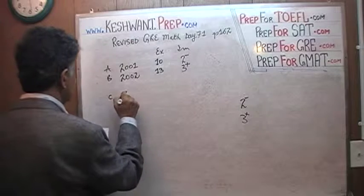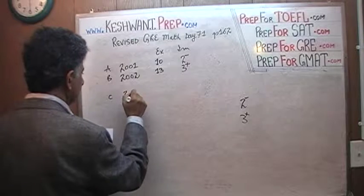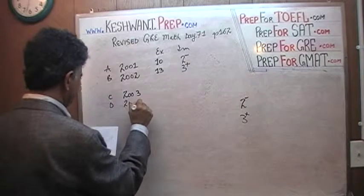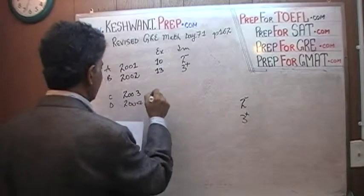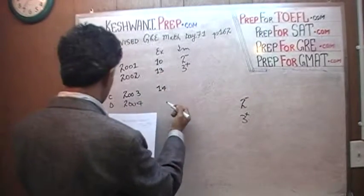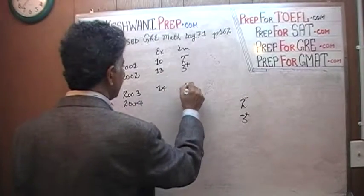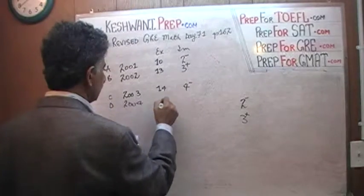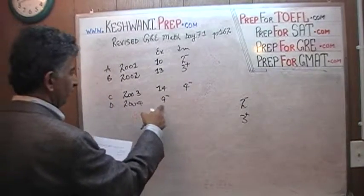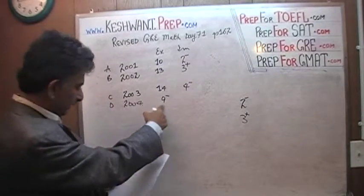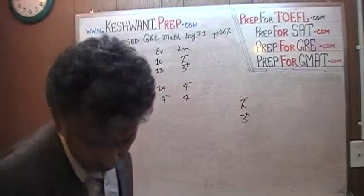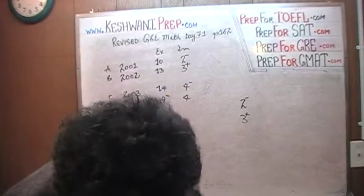In 2003, exports were 14 billion and imports were a little under 4 billion. In 2004, exports were a little under 9 billion and imports were looks like exactly 4 billion — I want to verify that it is exactly 4 billion.